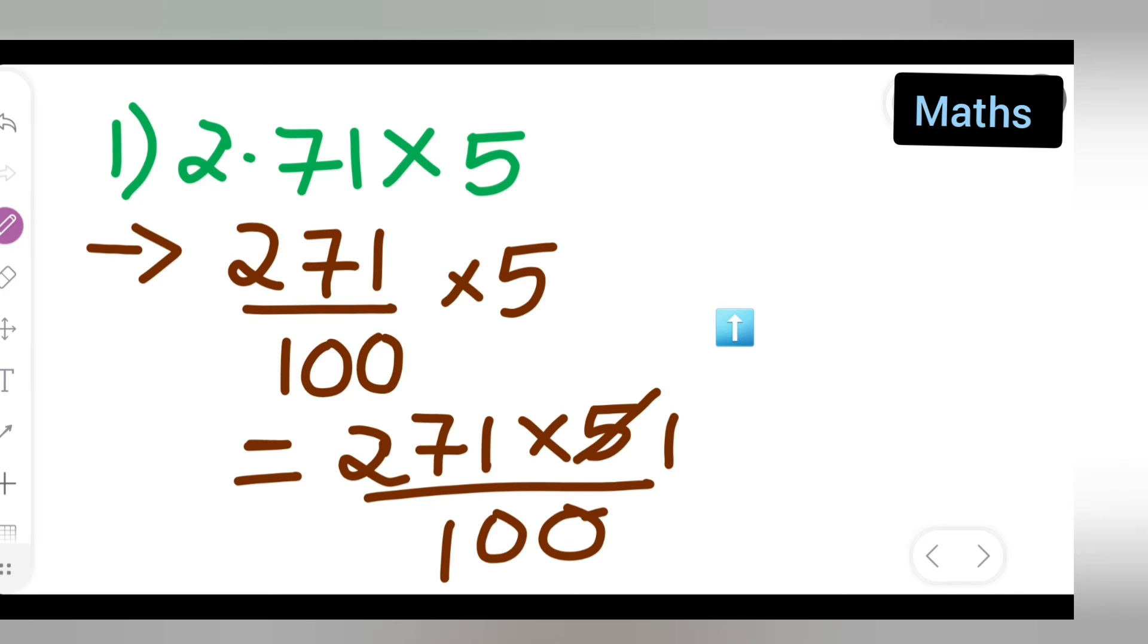You could simplify first, but what I'll do is don't cancel this term. Don't cancel - write down this 5 as it is and write down this 100 as it is.